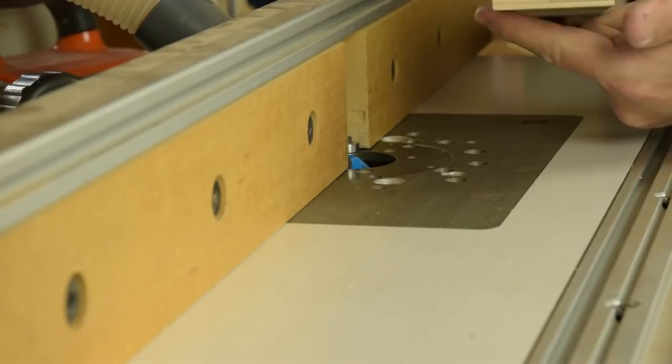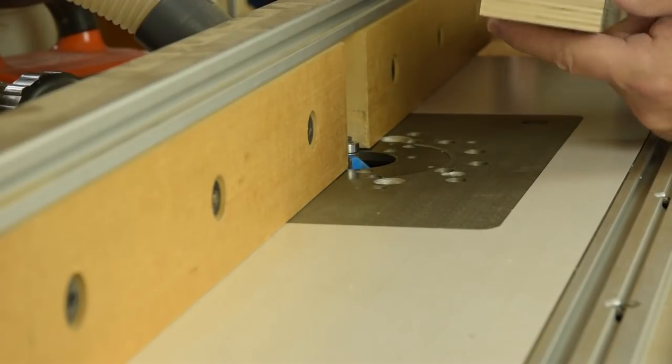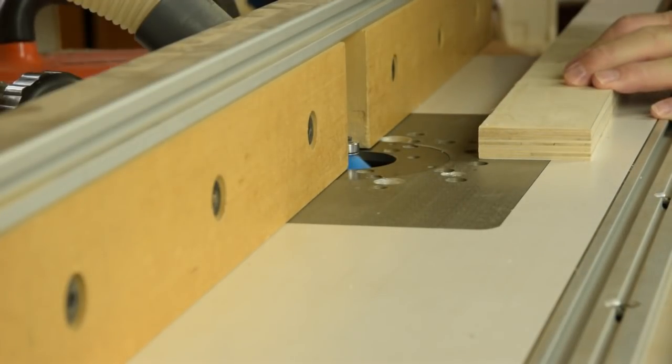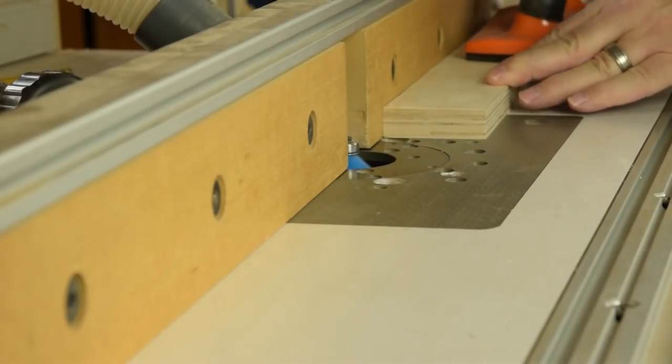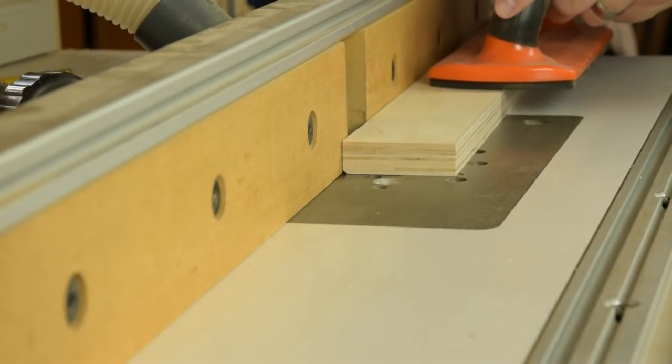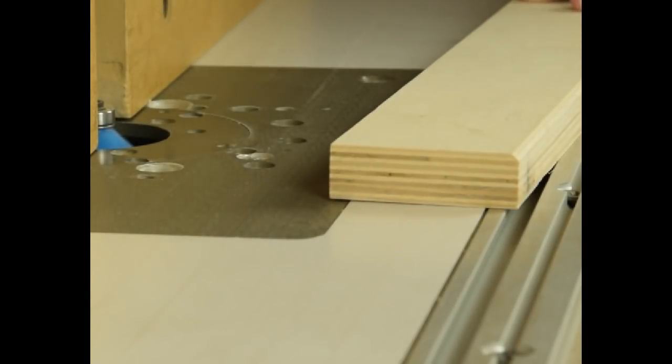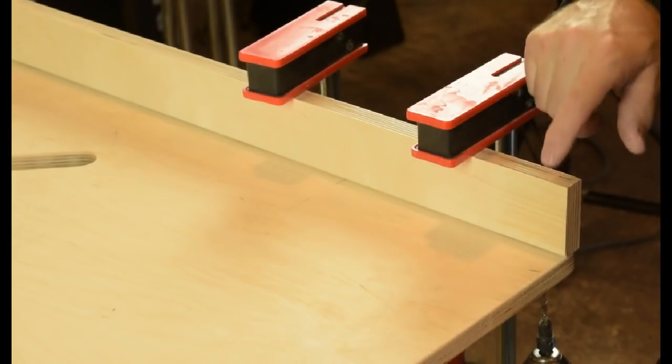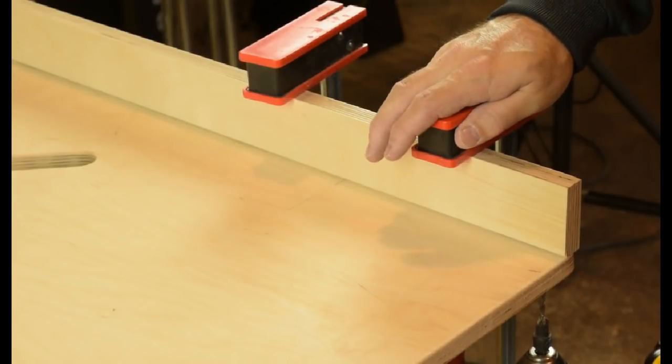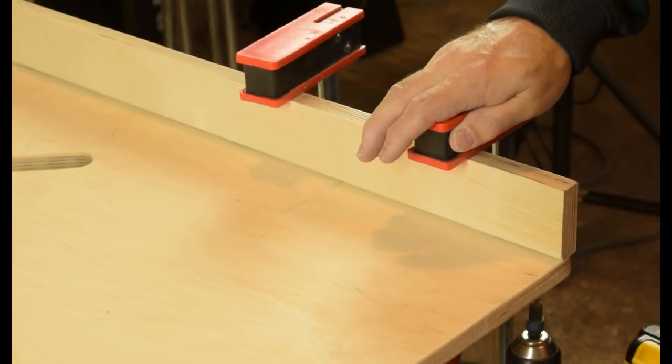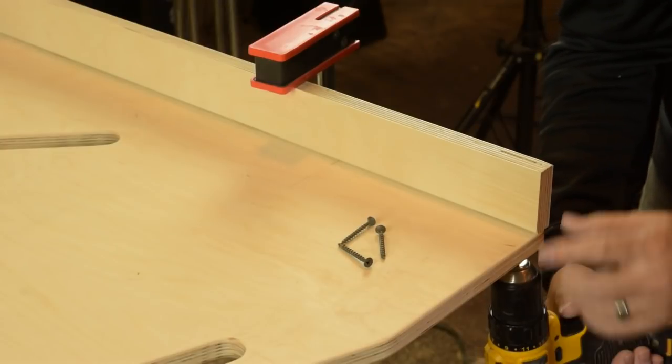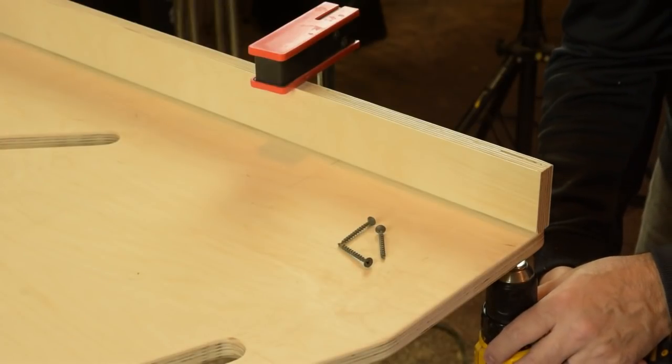And then make a tiny chamfer on the underside of the fence for a dust relief. And then just pre-drill a hole on either side of the fence so you can get things aligned. And from there you can go ahead and attach the fence with a couple of drywall screws.